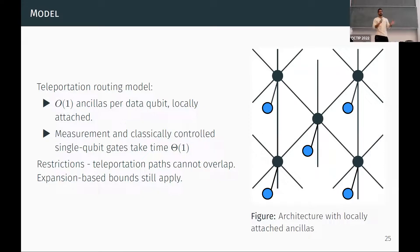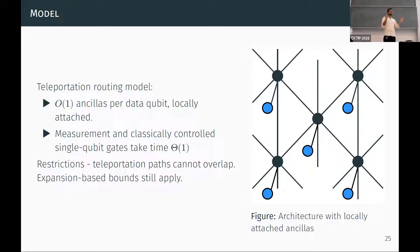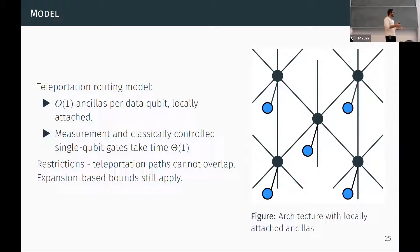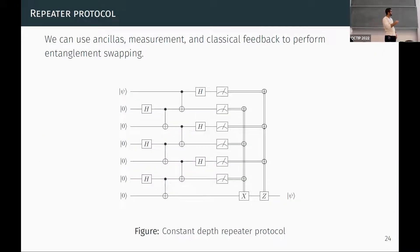In our routing model for teleportation, qubits are hard to generate, so we only allow a constant number of ancillary qubits per data qubit, with ancillary qubits locally attached. We consider measurement and classically controlled single-qubit gates to take constant time — the same as a two-qubit gate. The constant number of ancillas restricts us because teleportations in the repeater protocol must go along certain paths, and with only a constant number of ancillas per vertex, we can't have too many paths intersecting at any one vertex.